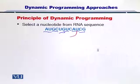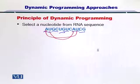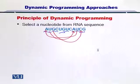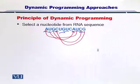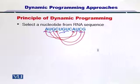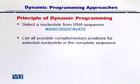This U can also bind with this A. Similarly, there can be a hydrogen bond formed between these two nucleotides. This G can also form a bond with this C, or this G can make a bond with this C, and so on. As you can see, there are so many possibilities of coupling the complementary nucleotides. So how exactly do we find which set of couplings will give us the best folded RNA? That is a very difficult question to answer, and for that we need the help of dynamic programming.